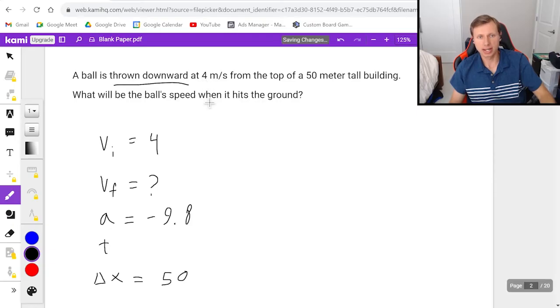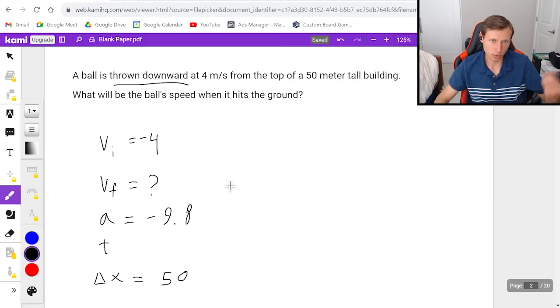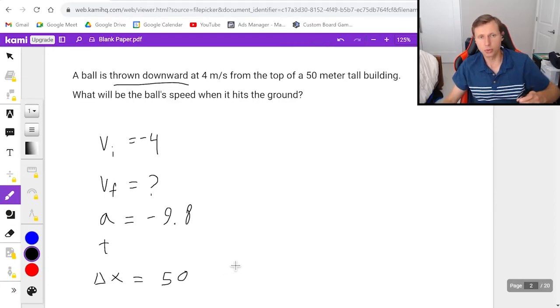And the answer is the first mistake I made was since it's thrown downward, it's not 4 meters per second because that means it's thrown upward. It's negative 4 because I'm throwing it downward and that's very important. The next mistake I made is I said delta x was 50 meters, but that's not true because that's saying you threw the ball up 50 meters. If you want to say it went down, you've got to say negative 50.